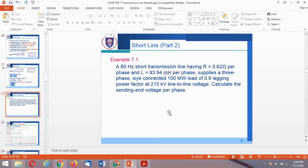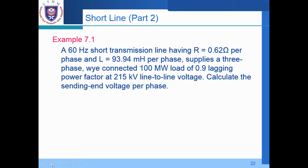The question states: a 60 Hz short transmission line having R equal to 0.62 ohm per phase, and L, the inductance, equal to 93.94 millihenry per phase. This transmission line is supplying a three-phase wye-connected 100 megawatt load at 0.9 lagging power factor, at 215 kV line-to-line voltage. We are asked to calculate the sending end voltage per phase.